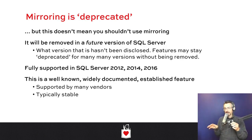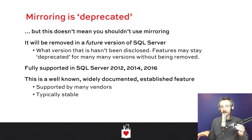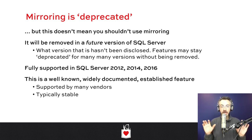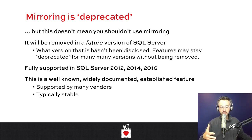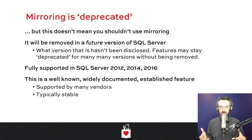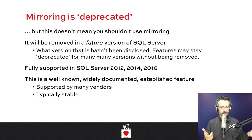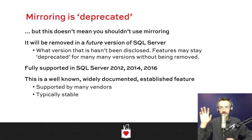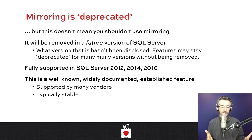Technically, database mirroring is deprecated, meaning Microsoft is going to remove support in some future version — you don't know which one. This is partly why they put out basic availability groups in SQL Server 2016 Standard, trying to give you the same functionality as database mirroring but different. Except it's not the same — it's much harder. Some of the troubleshooting requires a cluster and a domain, and until you get to 2016 Standard it's still a giant pain compared to database mirroring without a domain or cluster.